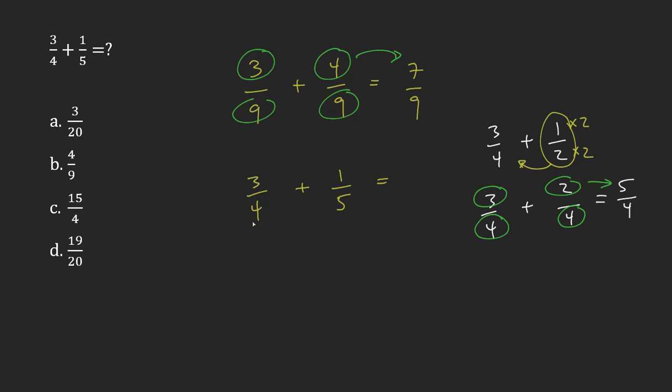So what do we do when we have 4 and 5? 4 doesn't go into 5, 5 doesn't go into 4. So what I can do is I can take both of these numbers, 4 and 5, multiply them together to get 20. The reason that I would do that is because multiplying the two of them together automatically gives me an answer that both of them go into.